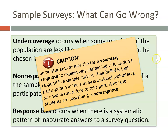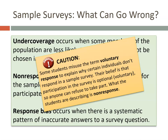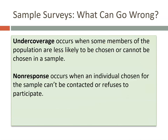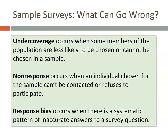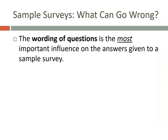Wording of the question can also contribute to response bias. The wording of a question is one of the most important influences on the answers given in a sample survey. So the four key things to consider are: under coverage, non-response, response bias, and wording of the question.